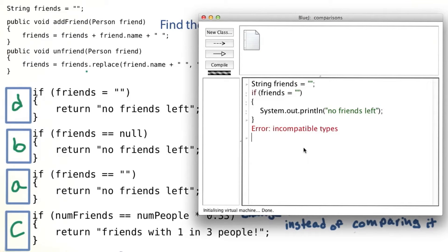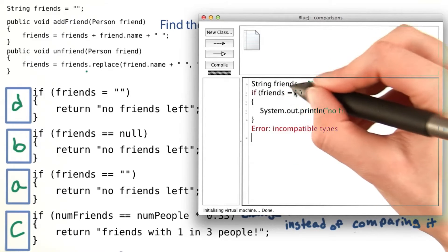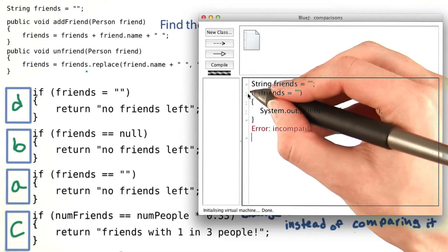Now if I run this, I get an error incompatible types, because friends equals the empty string isn't a condition. It can't go inside of an if check.